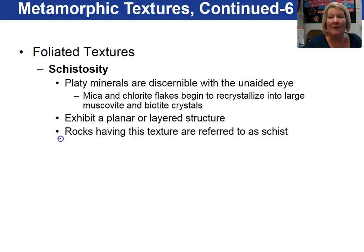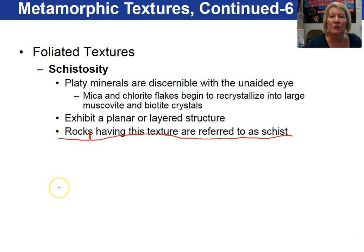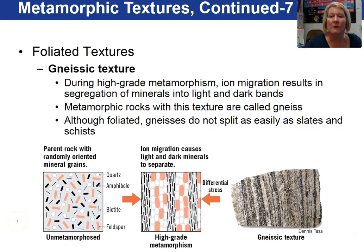Rocks having schistosity texture are simply called a schist. Schist is an intermediate to high-grade metamorphic rock. Our next foliated texture is gneissic texture. Gneissic textures indicate high-grade metamorphism where ions are actually moving and segregating into light and dark bands. We call these metamorphic rocks gneiss.